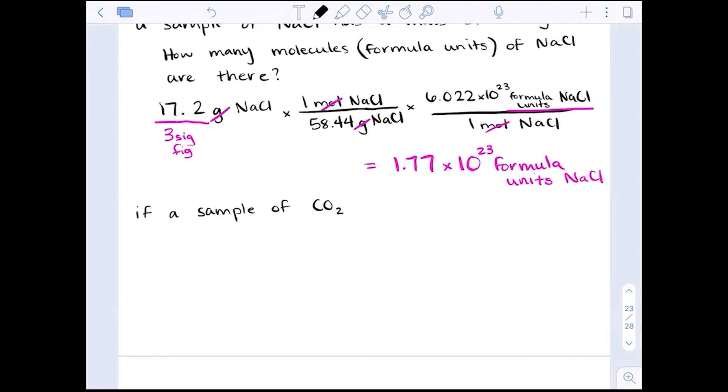If a sample of CO2 contains 6.11 times 10 to the 24th molecules. So again, in order to go from molecules to mass, we will need to be able to calculate a formula mass or a molecular mass for something like carbon dioxide. Just because it's a covalent compound does not mean it's any different than our molecular compound or our ionic compound that we just did.